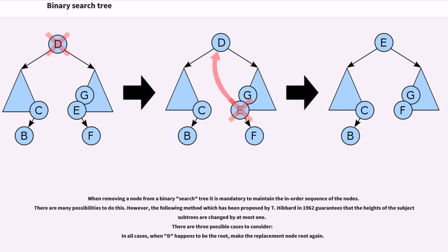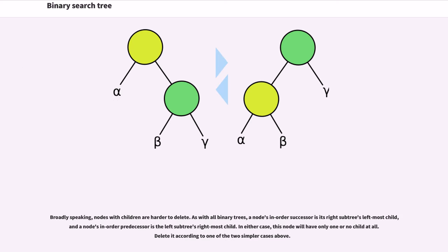When removing a node from a binary search tree, it is mandatory to maintain the in-order sequence of the nodes. There are many possibilities to do this. However, the following method, which has been proposed by T. Hibbard in 1962, guarantees that the heights of the subject subtrees are changed by at most one. There are three possible cases to consider. In all cases, when D happens to be the root, make the replacement node root again. Broadly speaking, nodes with children are harder to delete. As with all binary trees, a node's in-order successor is its right subtree's leftmost child, and a node's in-order predecessor is the left subtree's rightmost child. In either case, this node will have only one or no child at all. Delete it according to one of the two simpler cases above.